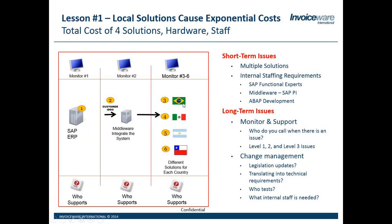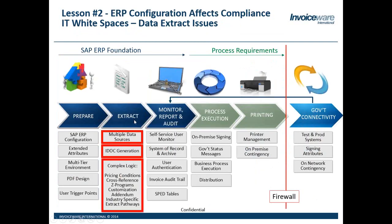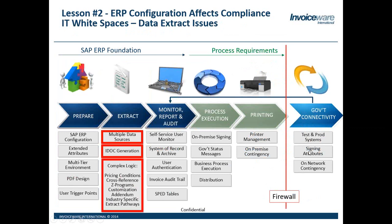The one thing I've learned over seven years in Latin America is e-invoicing is constantly changing. So if you have this infrastructure, which most companies have, it is expensive. Number two — and this is the most overlooked — when you look at government requirements, ERP configuration affects compliance and data extract issues. There's always government connectivity, and people always look at this as the primary problem. But you can't do government connectivity unless you do all the other work: all the process requirements and ERP foundational work to get the data out to the government properly.